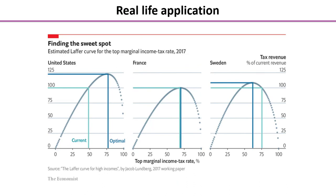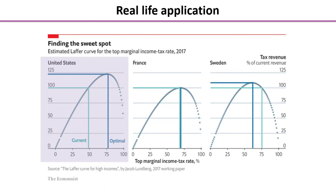Let's take a look at some real-life application. I've taken this from The Economist, who publish a wonderful daily chart on their website — well worth looking at for economics students to find out what's going on in the world. In 2019 they published an article estimating the Laffer Curve for top marginal income tax rate earners — so this is specifically for top income earners, not the average Laffer Curve for the whole economy, since different types of people have different incentives to work. Looking at the United States chart on the left, the marginal income tax rate is shown along the bottom.